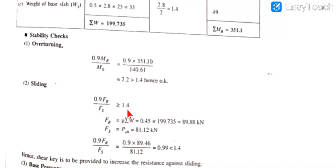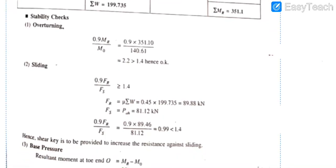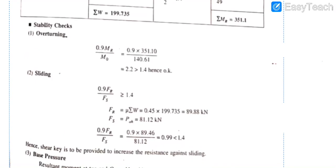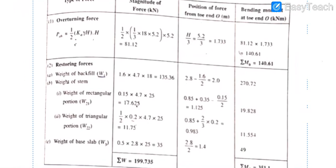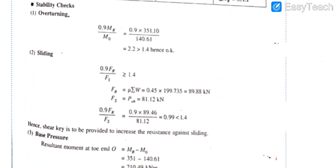For sliding check: 0.9 × FR / FS should be ≥ 1.4, where FR = μ × sigma W = 0.45 × 199.37, and FS (sliding force) = PA = 81.12 kN. Calculating this, the result is less than 1.4, meaning the wall is not safe against sliding. Therefore, we will provide a shear key at the base to resist sliding.